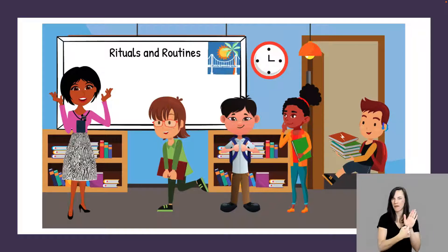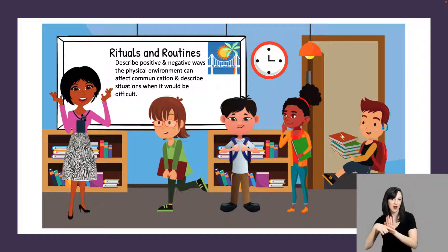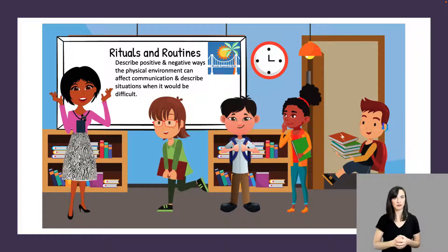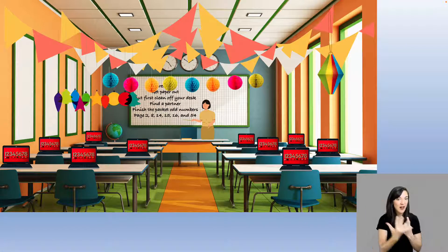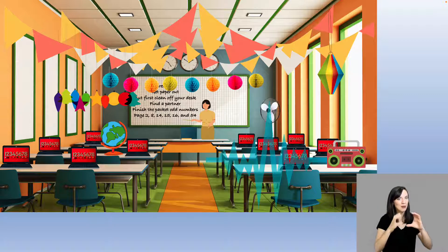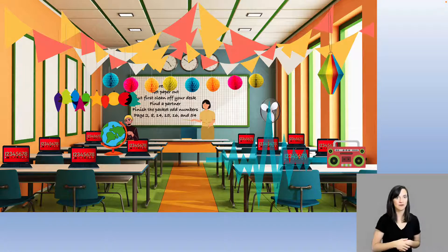For example, the Florida Expanded Skills Standard 5.2 states: describe positive and negative ways the physical environment can affect communication, and describe situations when it would be difficult. Regarding this standard, let's think back to the classroom we saw earlier. Adults may be able to see how this type of environment can negatively impact the communication conditions for a student who is DHH. But teachers of the deaf and hard of hearing need to help students who are DHH be able to express that so they can advocate for their needs.